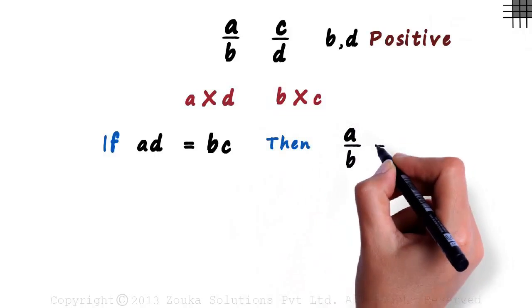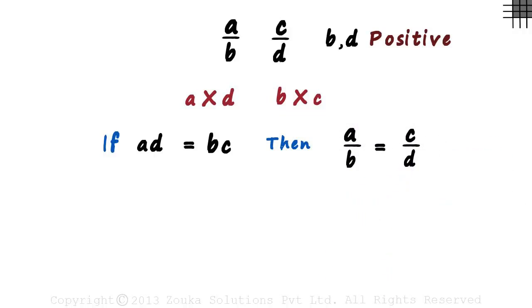Then A by B will also be equal to C by D. If the product of these two integers is equal to the product of these two integers, then the two rational numbers will be equal.